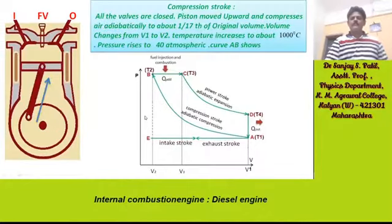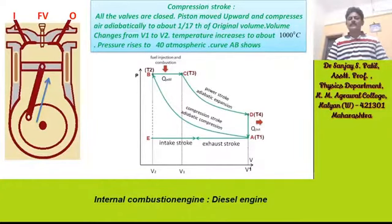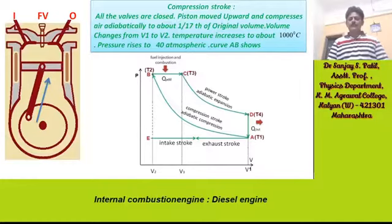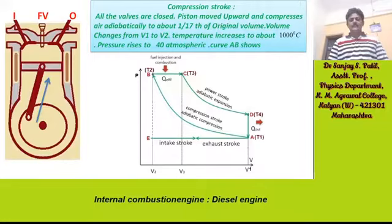Now we discuss the compression stroke. All the valves are closed. The piston moves upward and compresses air adiabatically to about 1/17th of the original volume. Volume changes from V1 to V2, as seen in the right-hand diagram. Temperature increases to about 1000 degrees centigrade, and pressure rises to about 40 atm.